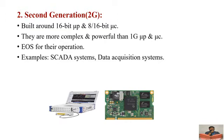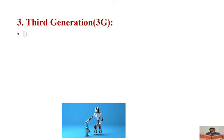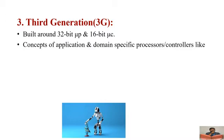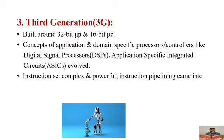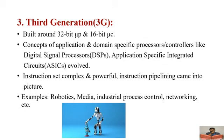Third generation embedded systems are the advanced version of the second generation, built around 32-bit microprocessors and 16-bit microcontrollers. The concepts of domain-specific processors and controllers like Digital Signal Processors (DSPs) and Application Specific Integrated Circuits (ASICs) were introduced. With DSP and ASIC concepts, the instruction set is more complex and very powerful, and instruction pipelining also came into existence in third generation embedded systems.